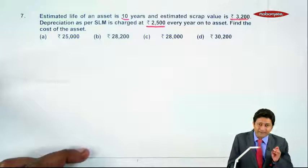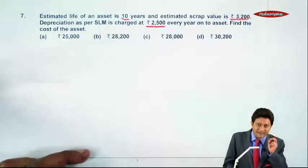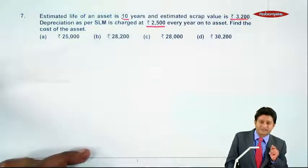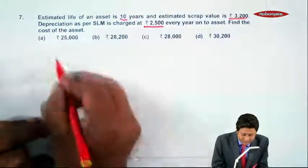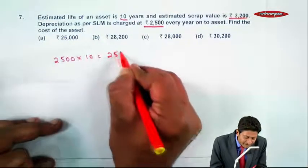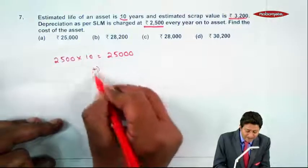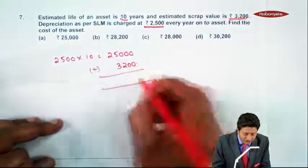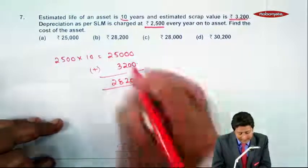We know depreciation is charged as: Original cost minus estimated scrap value equals depreciable amount, divided by number of years. Here depreciation is ₹2,500, so ₹2,500 times 10 equals ₹25,000 is the depreciable amount. Plus you'll have ₹3,200 scrap value remaining, so your original cost is ₹28,200. That is option B.